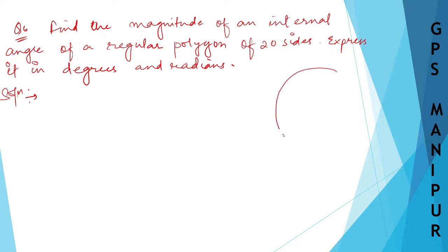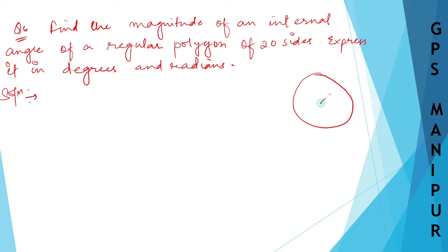Let me just draw a circle and try to understand this question by drawing a circle. There is a center here — and if I join this, like this, it is a polygon. It will be having 20 sides, a polygon of 20 sides.